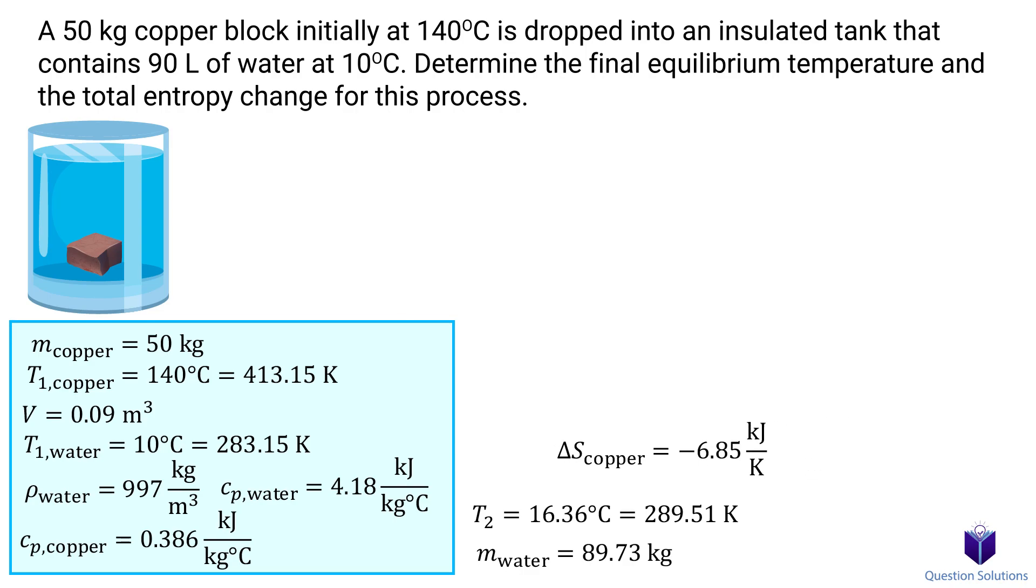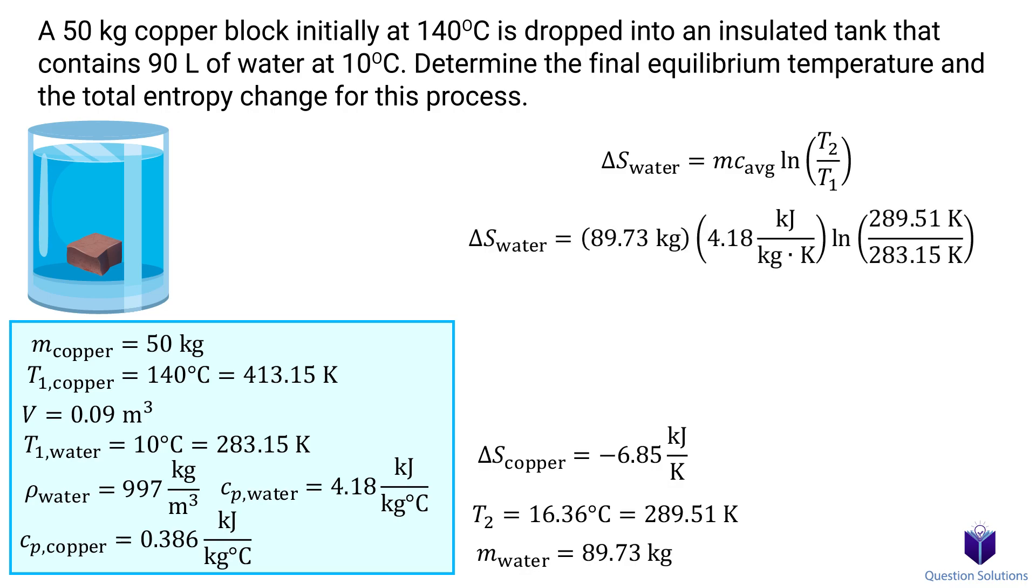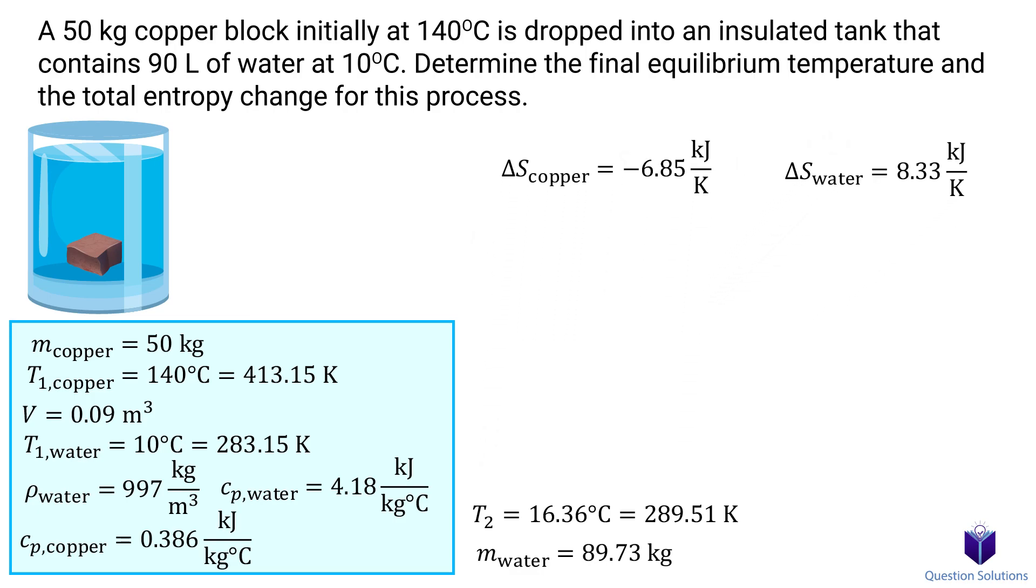Next, we can figure out the entropy change of the water. This time, I'm going to write it out in one line with the value being multiplied by the mass. Let's plug our values in and solve. Now that we have both of these values, the total change is the addition of both. Solving gives us our answer.